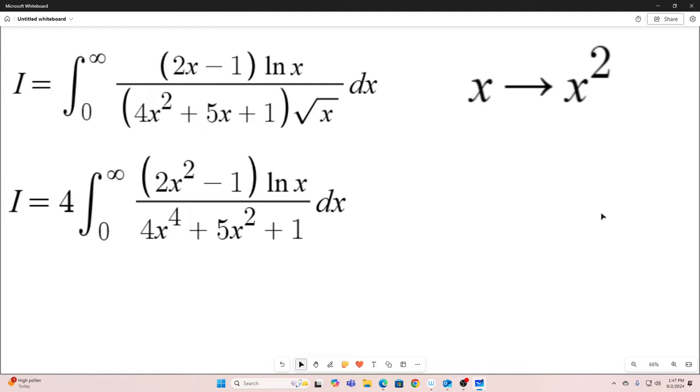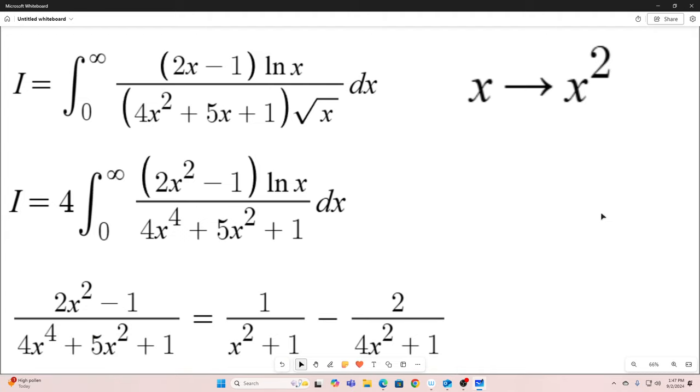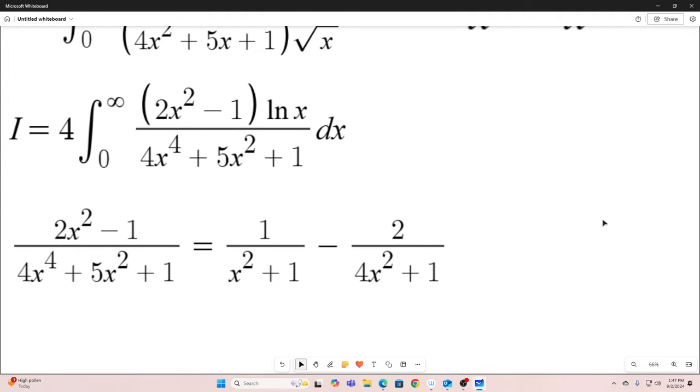Next, we're going to recognize that we can actually break this 2x squared minus 1 over 4x to the 4th plus 5x squared plus 1 up into two separate fractions using partial fraction decomposition. This denominator right here can be factored into x squared plus 1 times 4x squared plus 1. And if you use partial fraction decomposition, this is what you get.